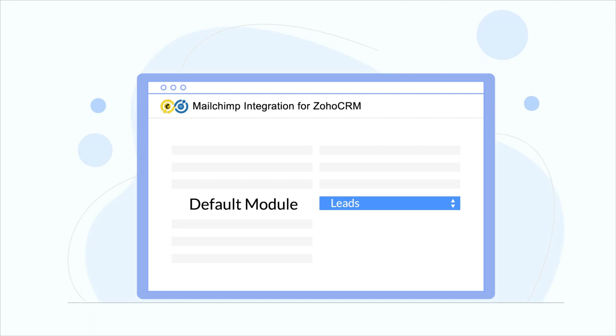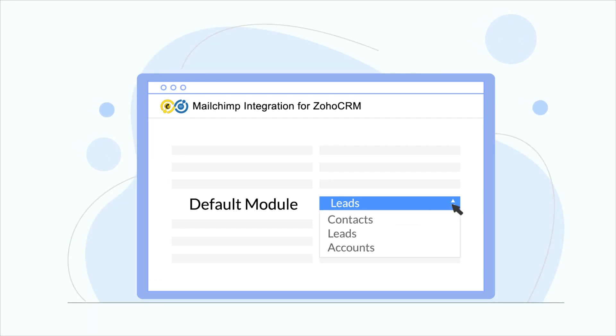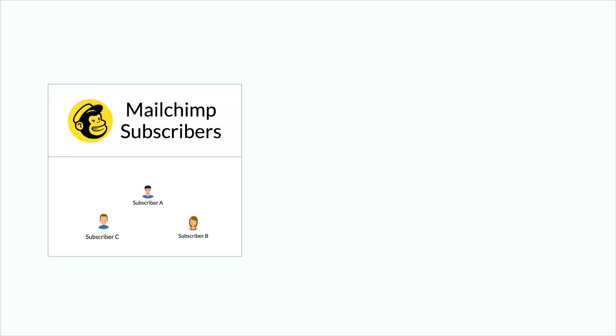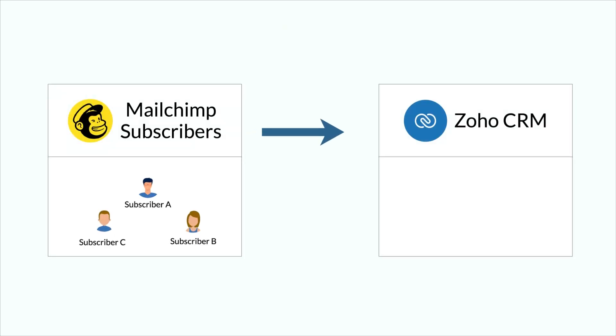The subscribers will be synced to the default module selected. If you select Leads as your default module, then all of your MailChimp subscribers will be synced as leads in Zoho CRM.